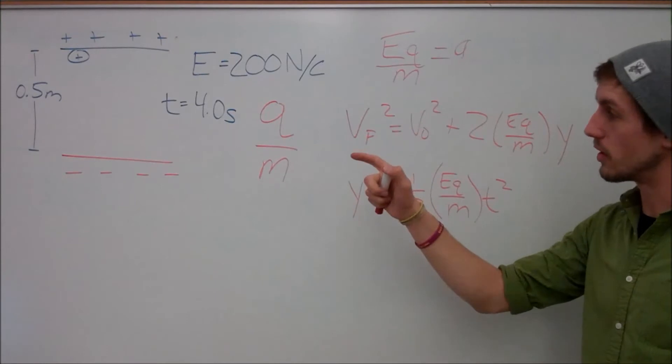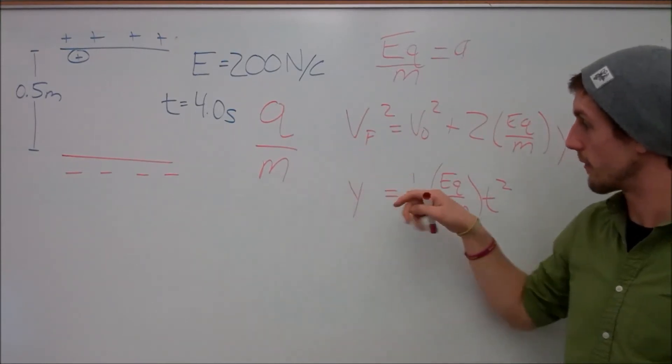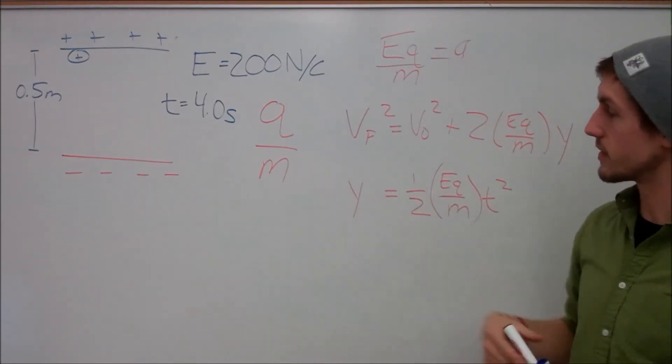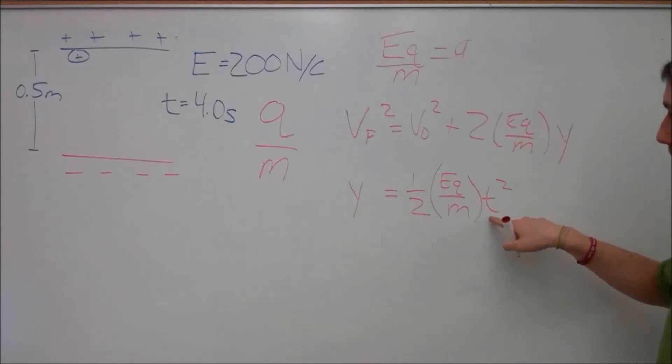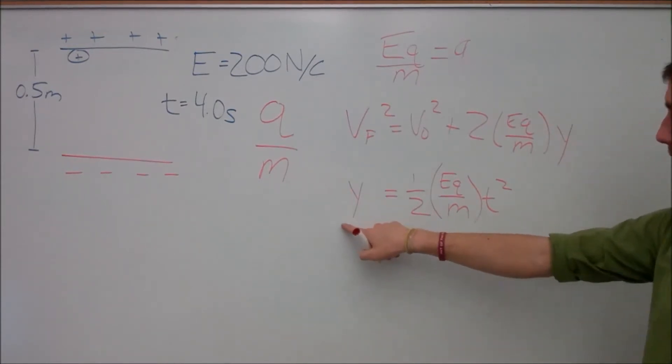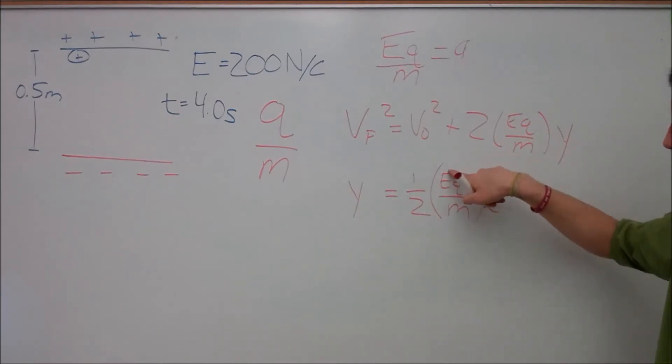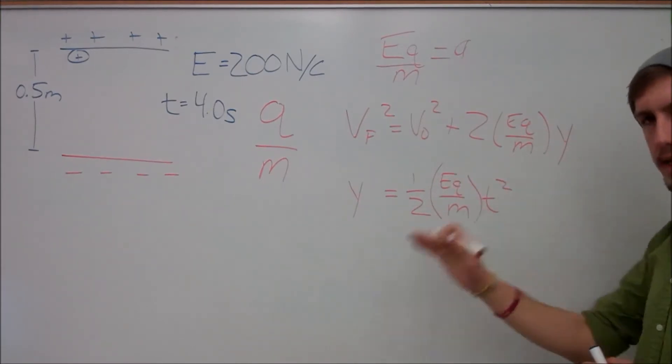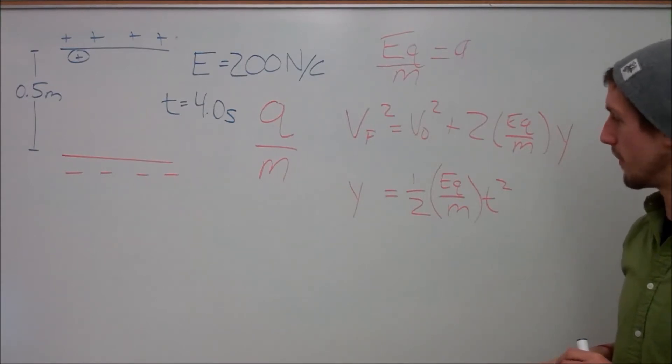So now we can go into our kinematic formulas, and since you gave us a time, we're going to use the one that has the time involved in it. So we'll have that separation distance, one half, and the electric field, which was given, and the time. Now we're going to isolate for our Q over M. So I want to keep Q over M, since they're already on top. Q is on top of M.